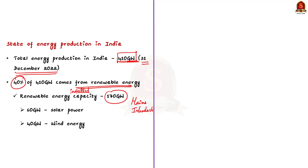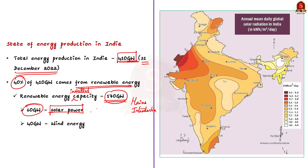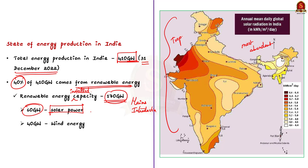Looking at the current data relating to energy production from different renewable energy sectors: the renewable energy installed capacity is 170 gigawatts, and out of this, nearly 60 gigawatts comes from solar power alone. Solar energy is the most abundantly produced renewable energy in India because India is a tropical country with a rich source of solar energy.